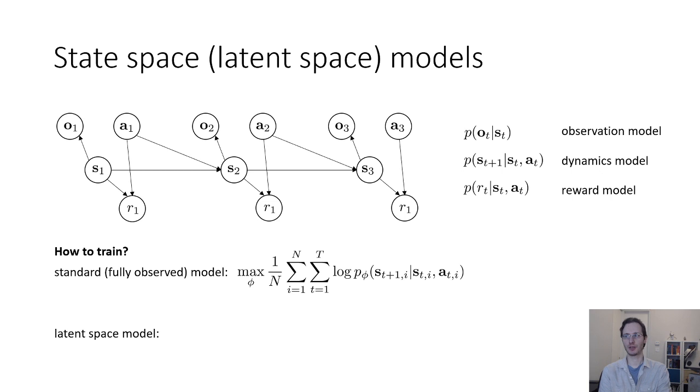If we have a latent space model, now we have a P of ot given st and a P of st plus 1 given st at. So, we have to maximize the log probabilities of both of those and potentially also the reward model if we want to add that in.